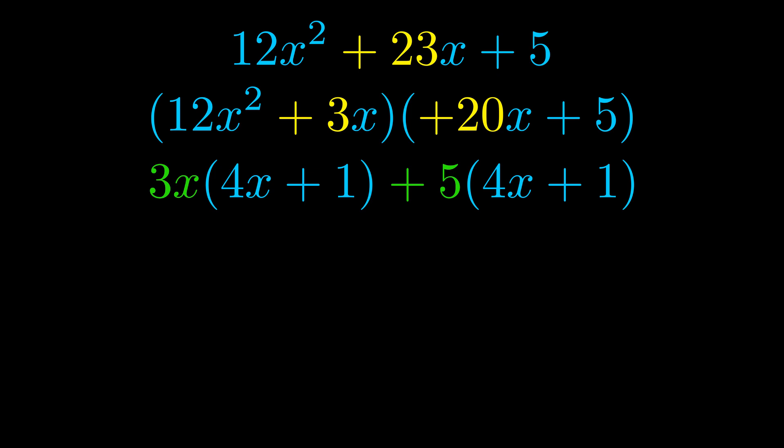Notice also how what remains inside of the parentheses is the same in both cases. The blue values are the same. Those blue values will become one of our factors and we will combine the two green values, the GCFs that we pulled out, to get the other one. And that is our fully factored equation.